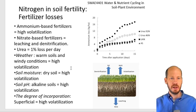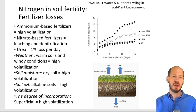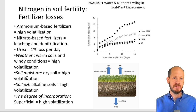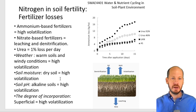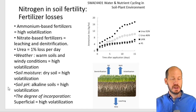In warm soils like in Oman you have high volatilization. With dry soils you increase volatilization because the concentration of ammonia in the soil solution is higher. With high moisture you will increase denitrification, creating more anaerobic conditions. With regards to pH, alkaline soils will have more volatilization than acid soils.